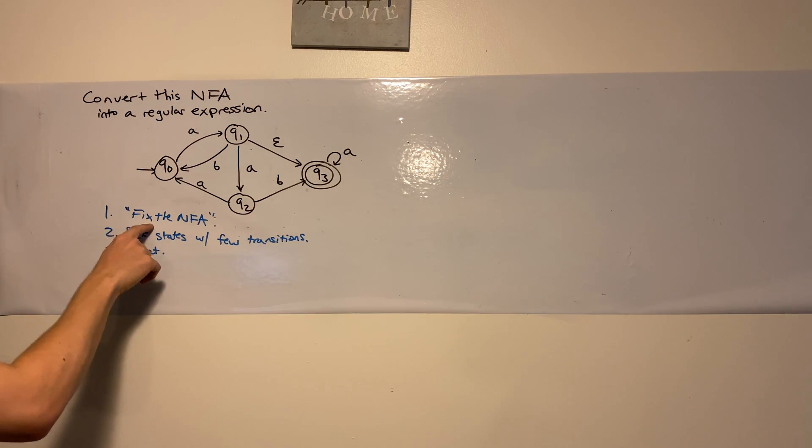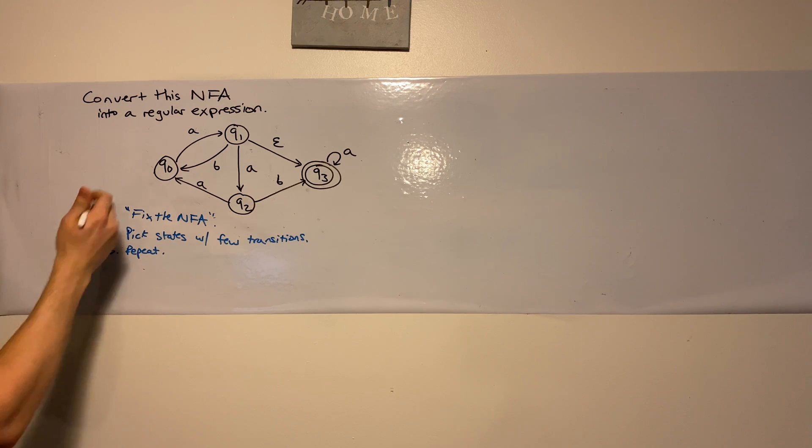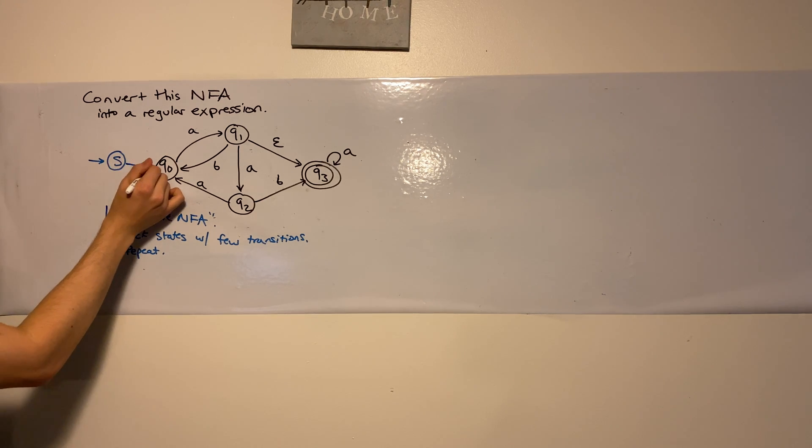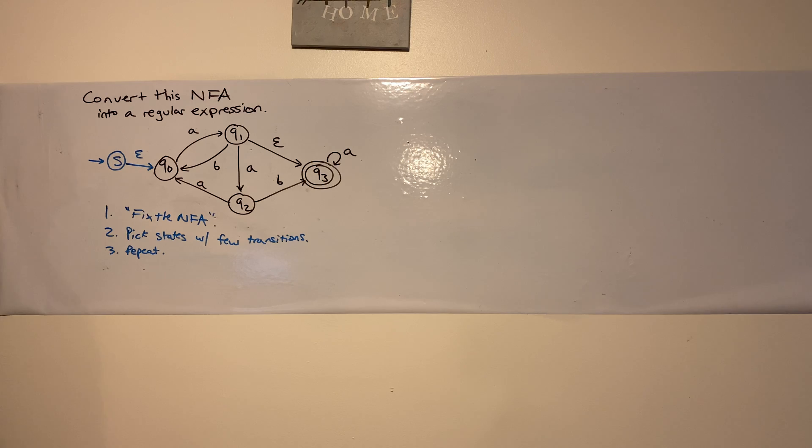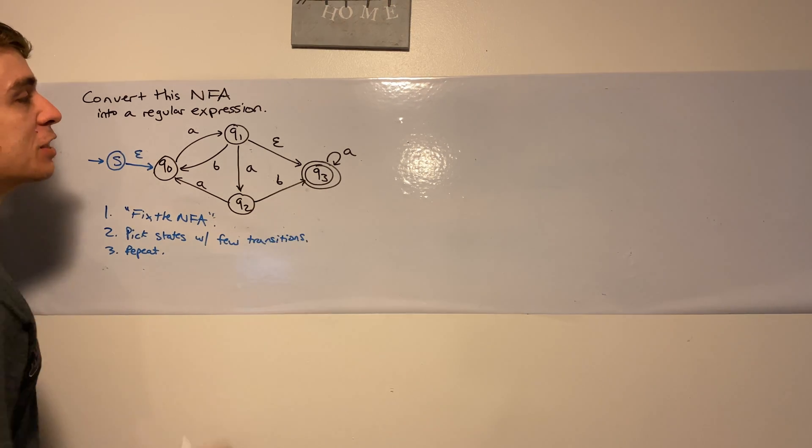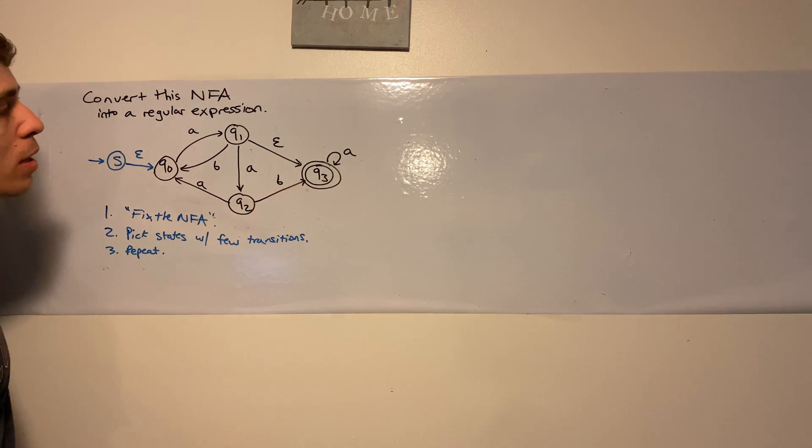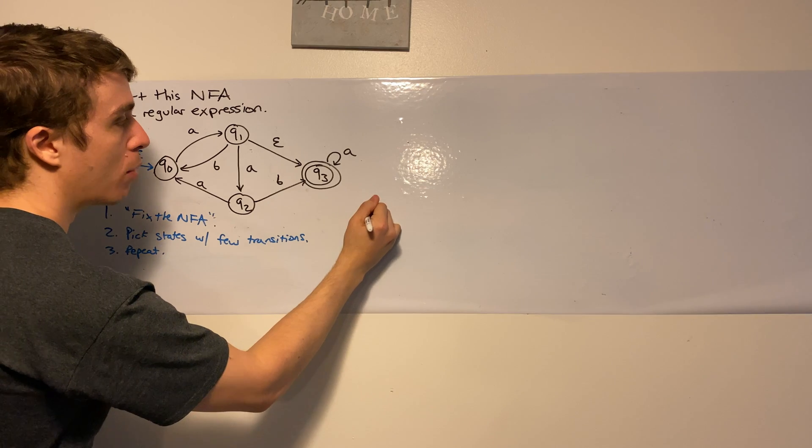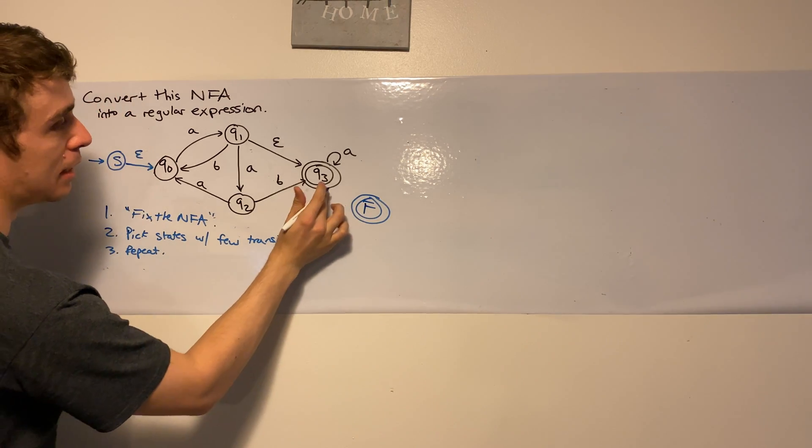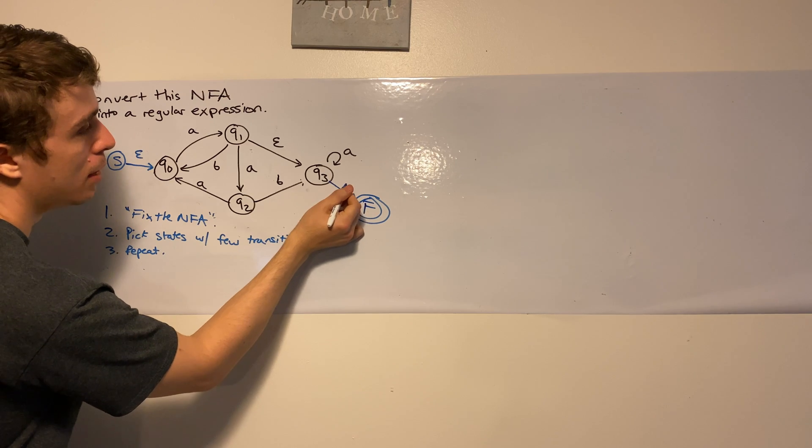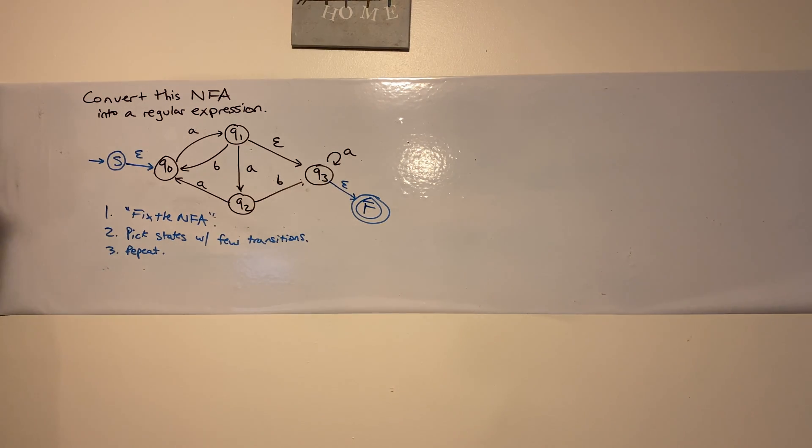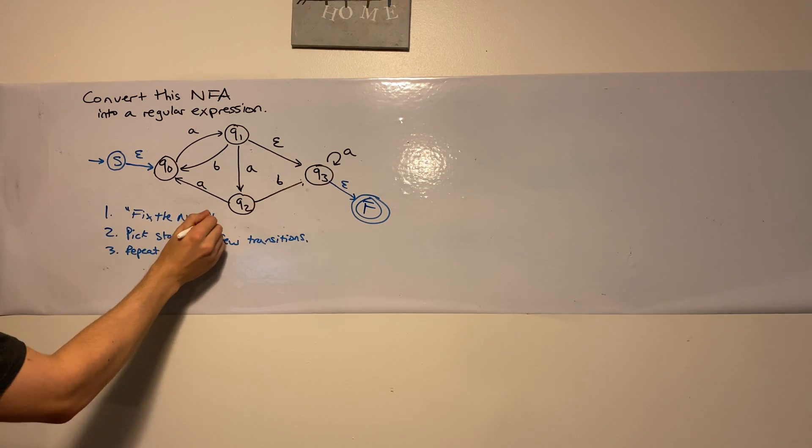So what do you do to fix the NFA? It's actually really simple. All that you have to do is the first part of that is to make a brand new start state. I'm going to call it S. So brand new start state. And it has an epsilon transition to the old start state. Always will do that regardless of what the NFA looks like. The other part of it is to do a very similar thing with any final state.